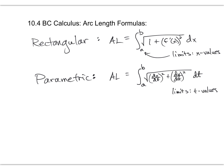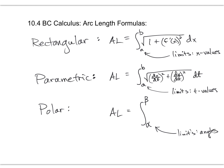Our last one we're doing today is in polar. In polar form, our arc length looks very, very similar, but this time we're going from alpha to beta — and those are angles this time. So the limits are angles. Inside the integral we have the square root of r² plus (dr/dθ)², dθ.